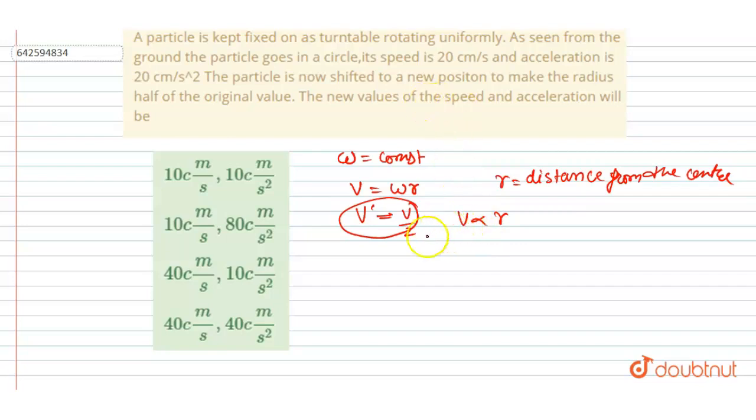Now let's see, acceleration is omega squared r. So acceleration is also proportional to the radius, or distance from the center, if omega is constant. If the distance is decreased to half, acceleration will also decrease to half.